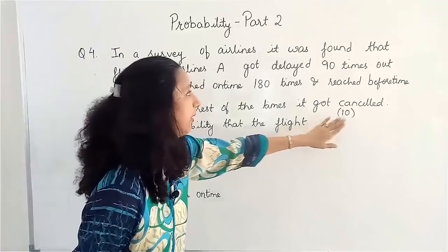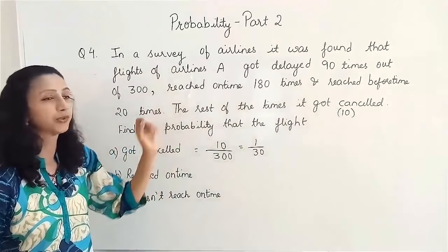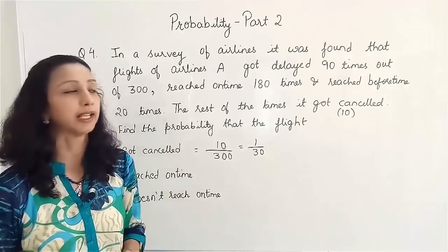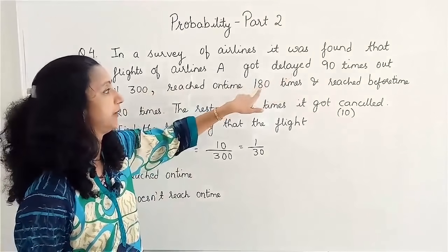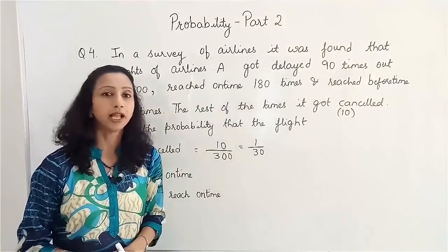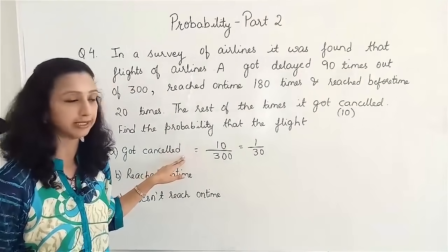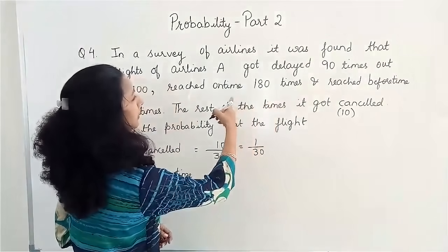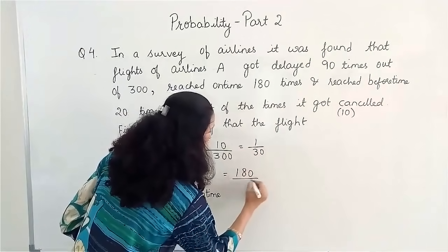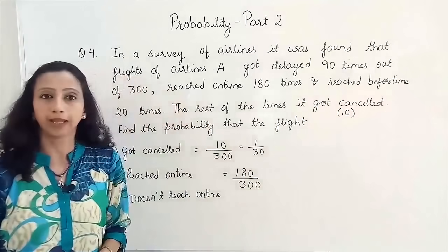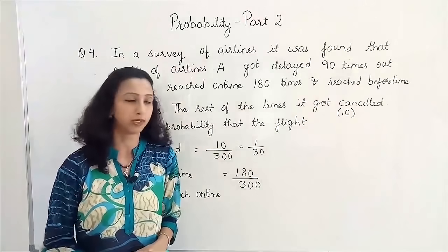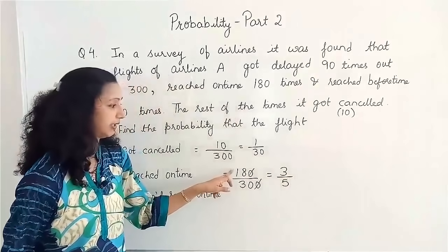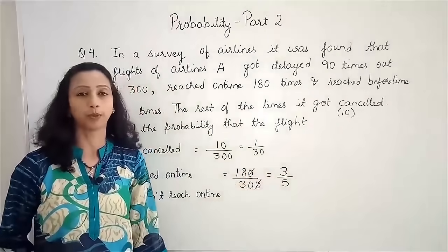How did we reach 10 cancellations? Because 90 times it got delayed, 180 times it reached on time, and 20 times it arrived before time — so only 10 times it got cancelled: 300 minus 90 minus 180 minus 20 equals 10. Now, the probability of a flight reaching on time: 180 times it reached on time, so 180 by 300. Cancelling by 6 gives 3 by 5 as the final probability.